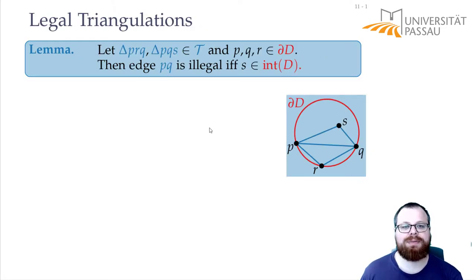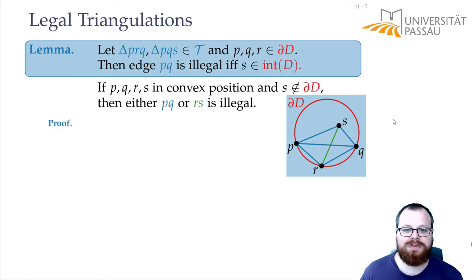Let's say that we have two triangles here. One between three points P, R, and Q, and one between P, Q, and S. We take the disk that is defined by the first triangle, by the three points P, R, and Q. Then we want to prove that this edge is illegal if S lies inside the disk. If it lies exactly on the boundary or outside the disk, then it is not an illegal edge.